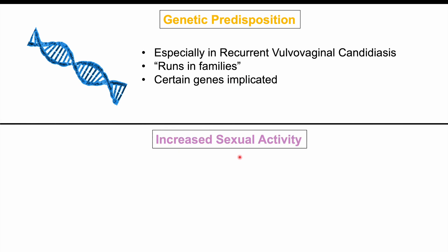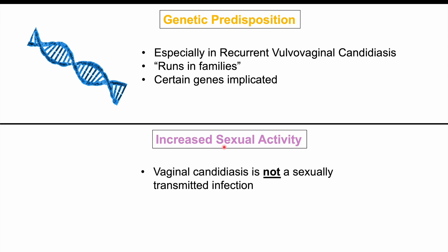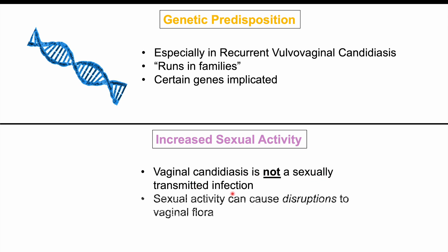Another factor that can increase the risk of a yeast infection is increased sexual activity. It's important to note that vulvovaginal candidiasis is not a sexually transmitted infection, but sexual activity can increase the likelihood of having it. The reason is that sexual activity can cause disruptions to vaginal flora — through the introduction of new microbes or simple mechanical disruption — which can trigger candida to overgrow.